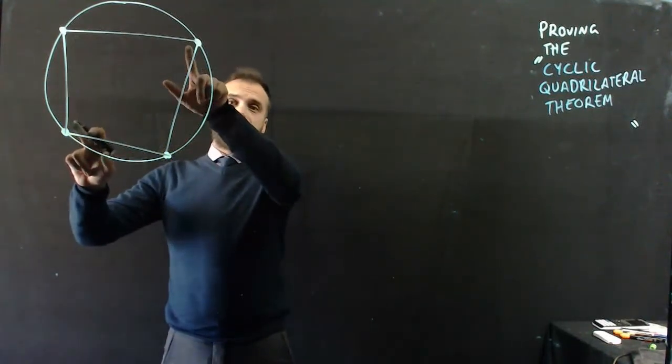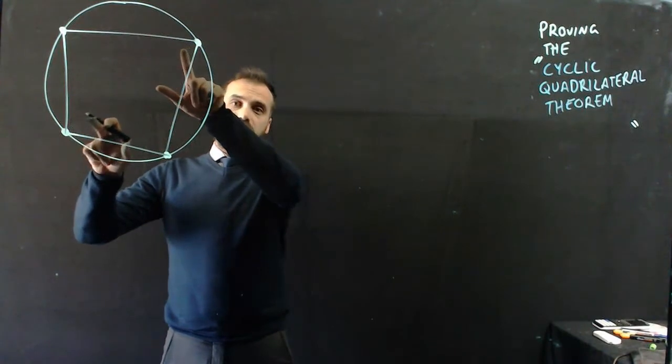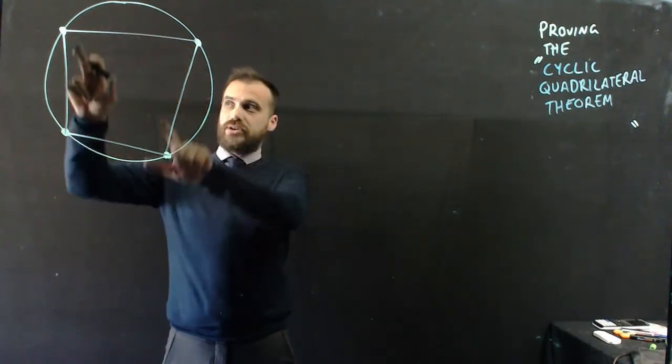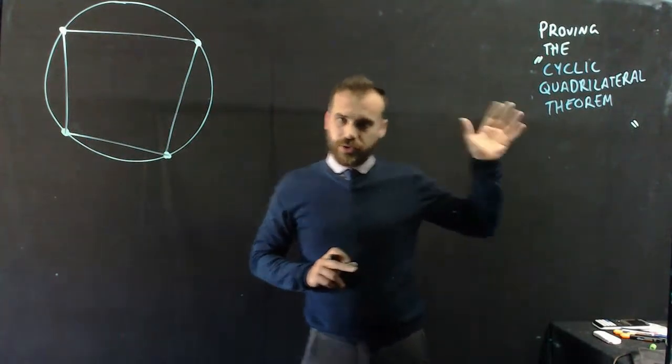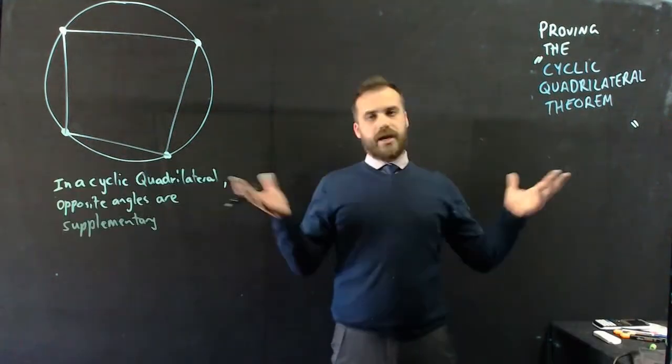This angle is going to add to this angle to make 180 degrees. So those both add up to make 180. That's what the cyclic quadrilateral theorem states. All right, so how should we prove that?